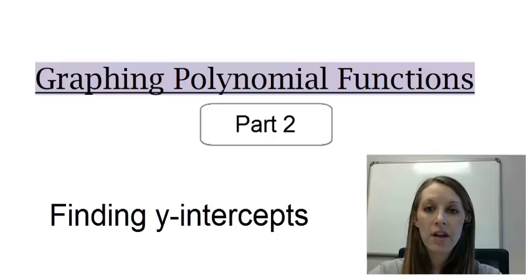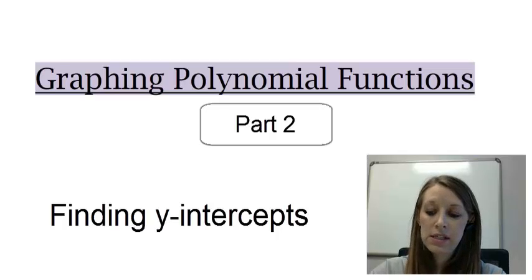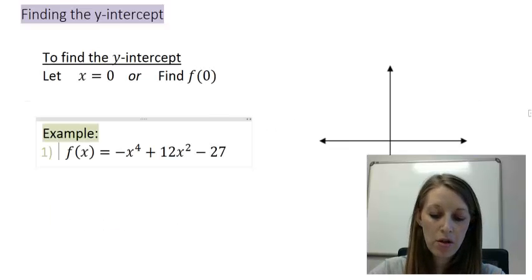So we are working on graphing polynomial functions. There are quite a few steps involved in this whole process. In the last video, we learned the first step of finding the end behavior, meaning what's happening on the very left and very right of the graph. The next step of graphing polynomial functions is to plot some points, and the easiest point to plot is going to be your y-intercept. So that is the second step of graphing polynomial functions.